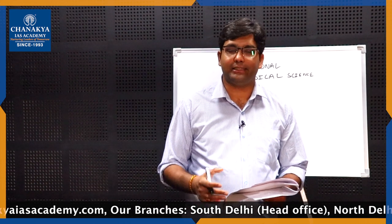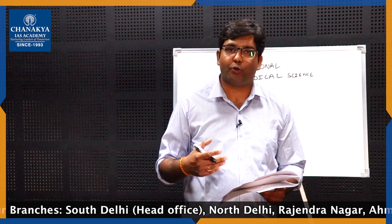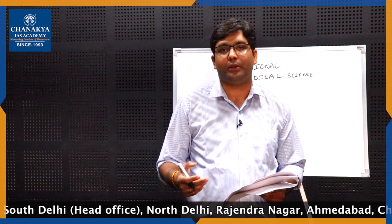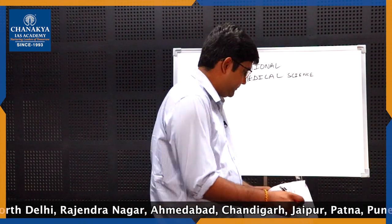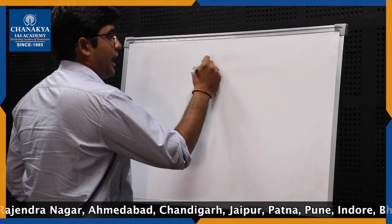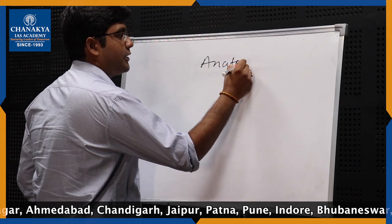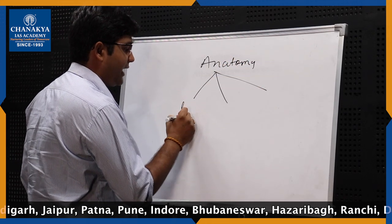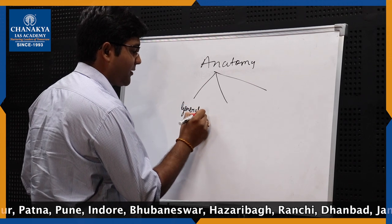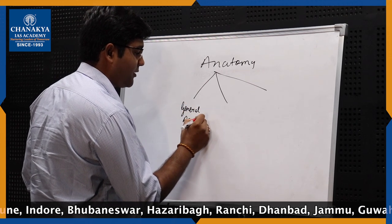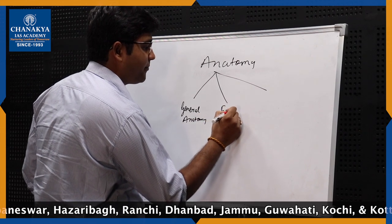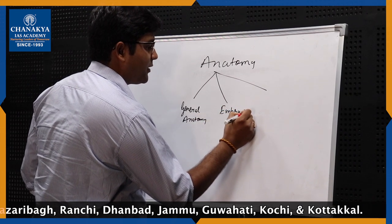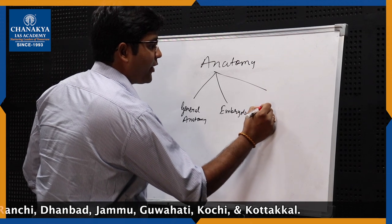We will be going section-wise — like anatomy, biochemistry, physiology — and discuss the questions as well as how to approach them with respect to each section. So let us start with the first section, that is anatomy. Anatomy has three portions: general anatomy, embryology, and neuroanatomy.